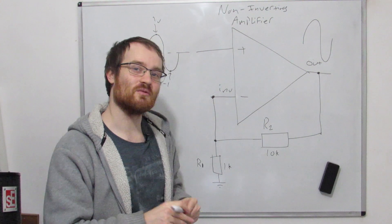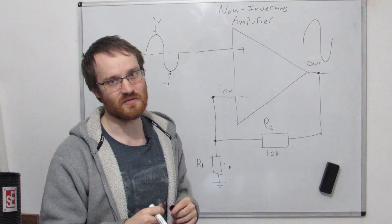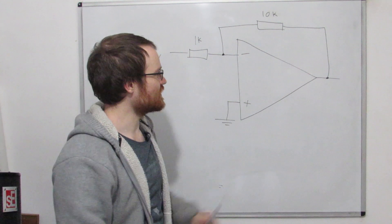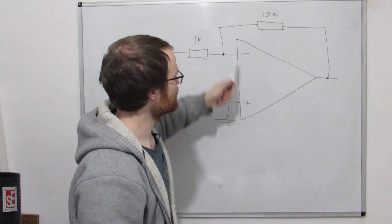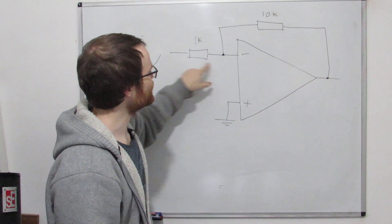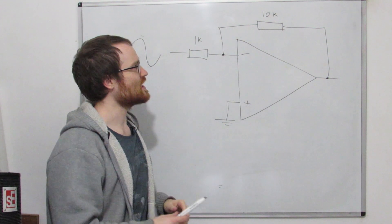So there's one more variation that I want to show you before we go on to building our active filter. Okay, so this is a slightly more interesting configuration. Now this time we've still got negative feedback, see, so we can still use our first golden rule,